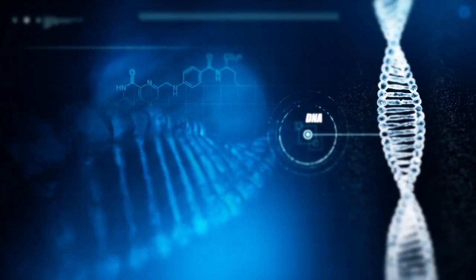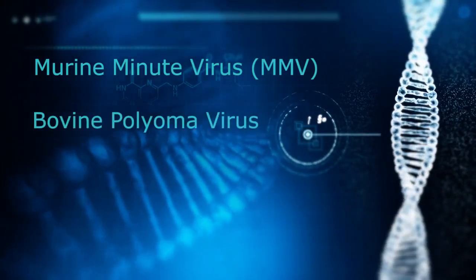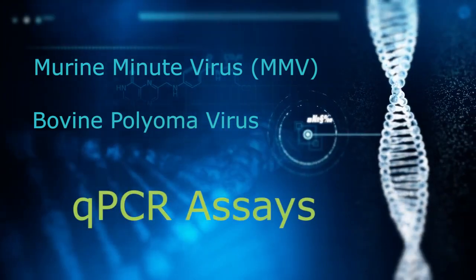Demonstrating the absence of adventitious viruses involves a number of both in vitro and in vivo assays designed to detect a wide variety of viruses, including viruses associated with specific species. Several assays are also available to detect retroviruses. Specific viral contaminants, such as murine minute virus (MMV) or bovine polyomavirus, are detected using qPCR assays. Although the master cell bank must be extensively characterized, less testing is required for the working cell bank and the endoproduction cells.